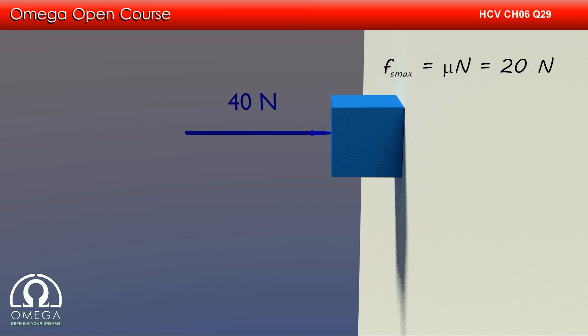Thus the maximum force that friction can apply is mu times normal, i.e. 20 N. Now, if the resultant of forces trying to move the block is greater than 20 N, the block will move. Otherwise it will stay at rest.